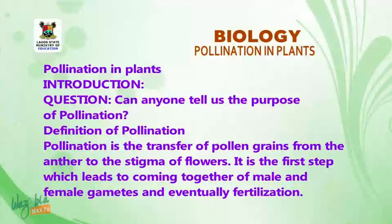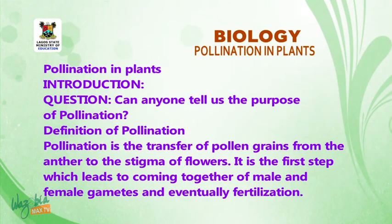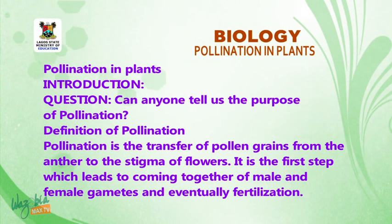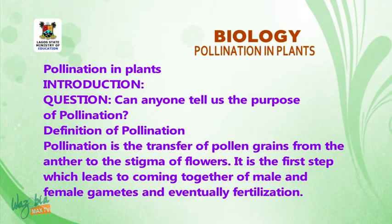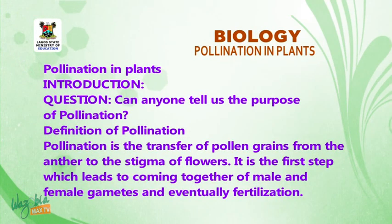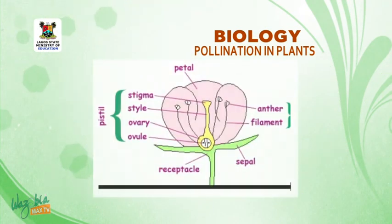Our topic again: Pollination in Plants. Can anyone tell us the purpose of pollination? Pollination is the transfer of pollen grains from the anther to the stigma of a flower. It is the first step which leads to the coming together of male and female gametes, and eventually fertilization. Look at the picture and take note of the anther and the stigma.